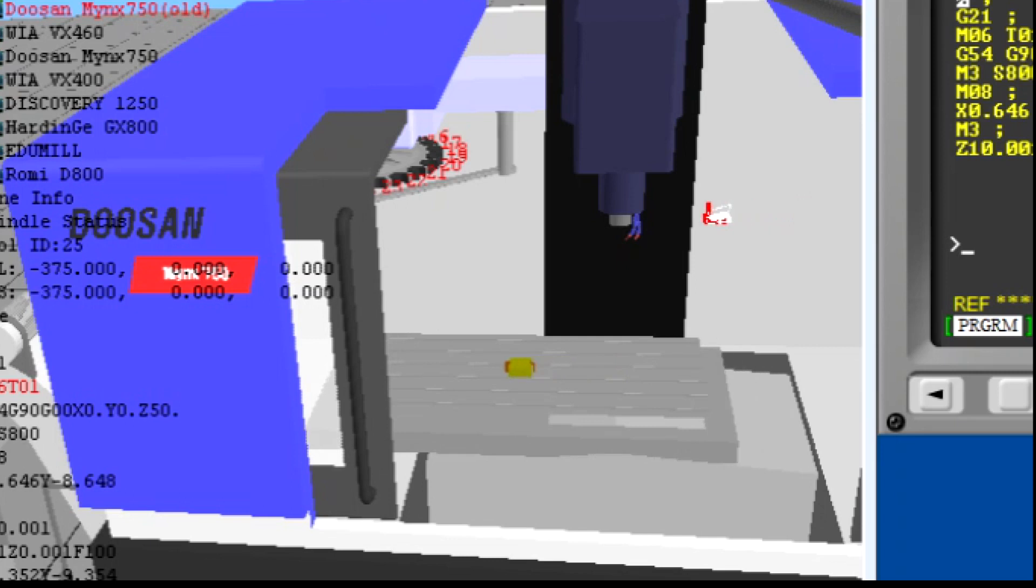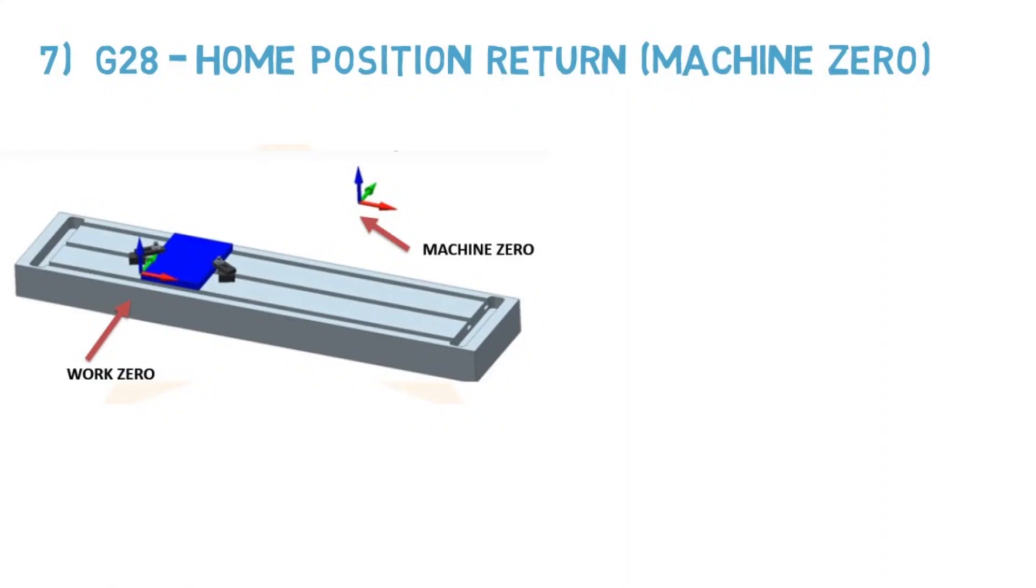So this position is preferred for cleaning the machine too. The format is G91, G28, Z0 to first set the Z axis, then in the next block G91, G28, X0, Y0. G91 is added for the incremental mode calculation.